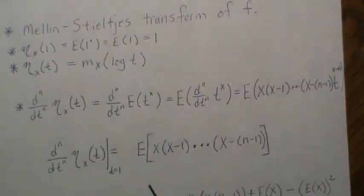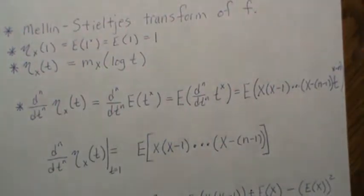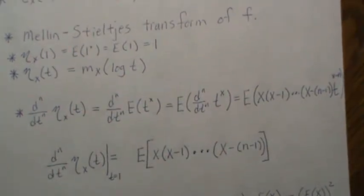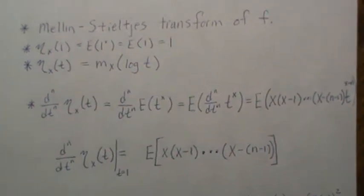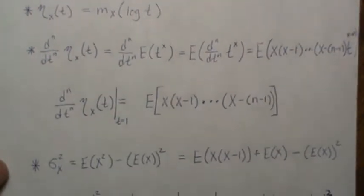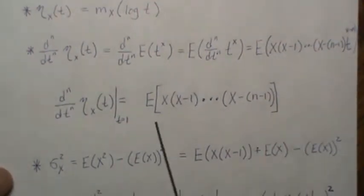Primarily, this is useful in discrete distributions, not continuous. But I'll give an example of how to calculate it in the normal setting, though again it's not as useful in the continuous setting.